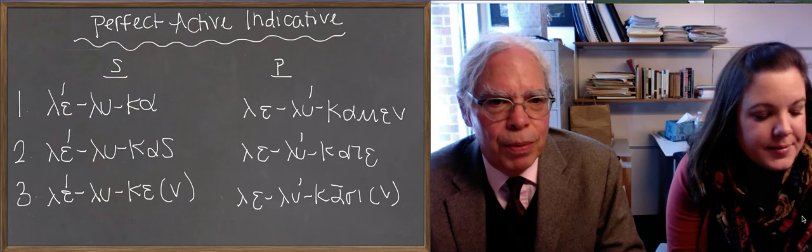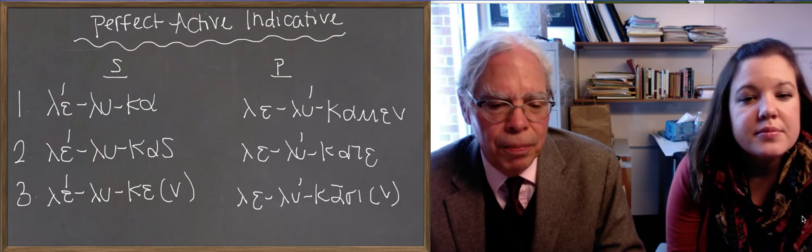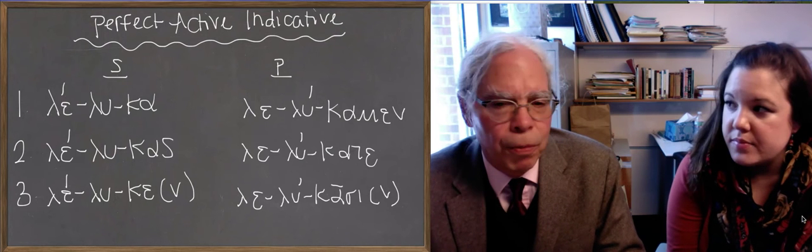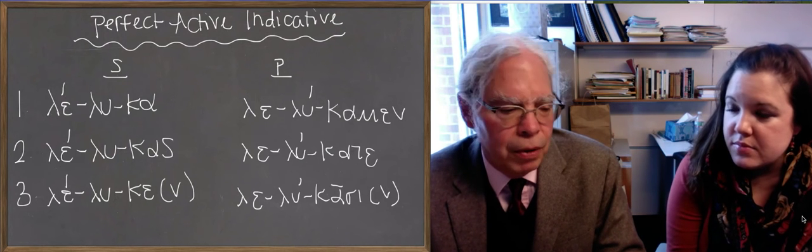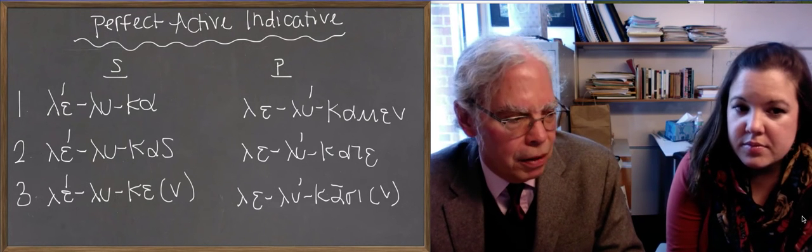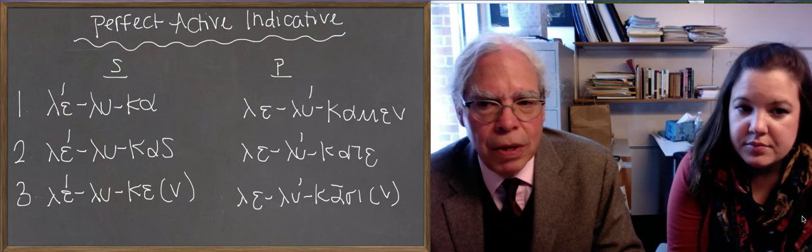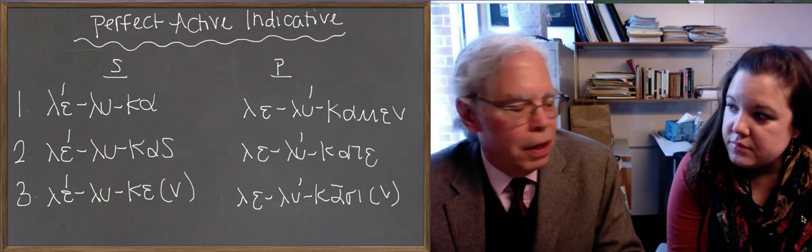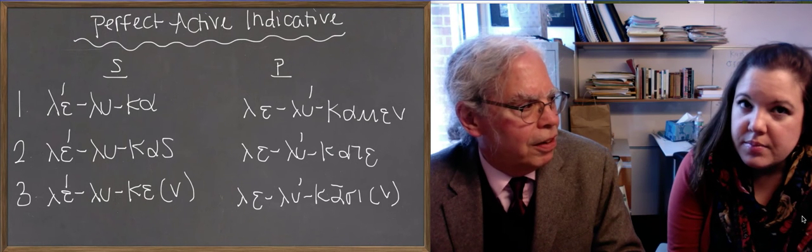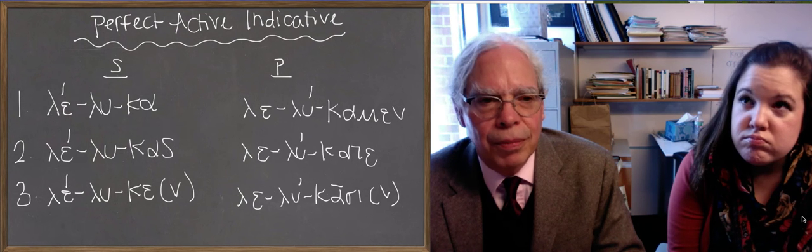What Blisi's written up is the forms of what I'm calling the regular perfect, the living, breathing, functioning way of forming a perfect of a verb whose stem begins with a consonant like λύω and παιδεύω and καλέω, verbs that end with a vowel like λύω ends with a upsilon, παιδεύω with an epsilon-upsilon, and καλέω also with an epsilon-upsilon.